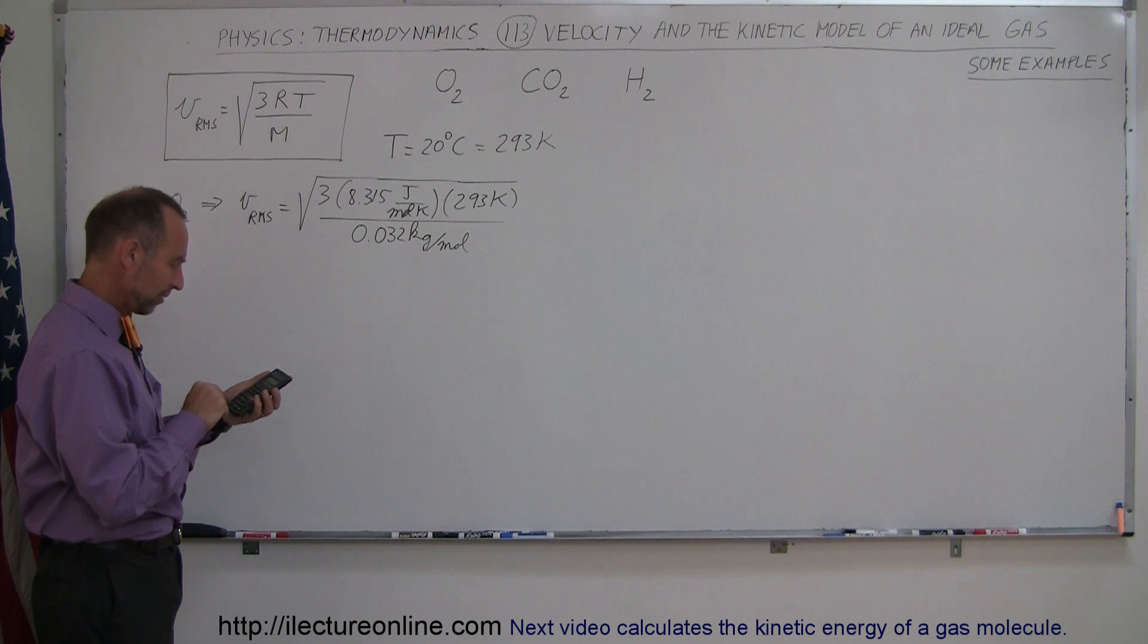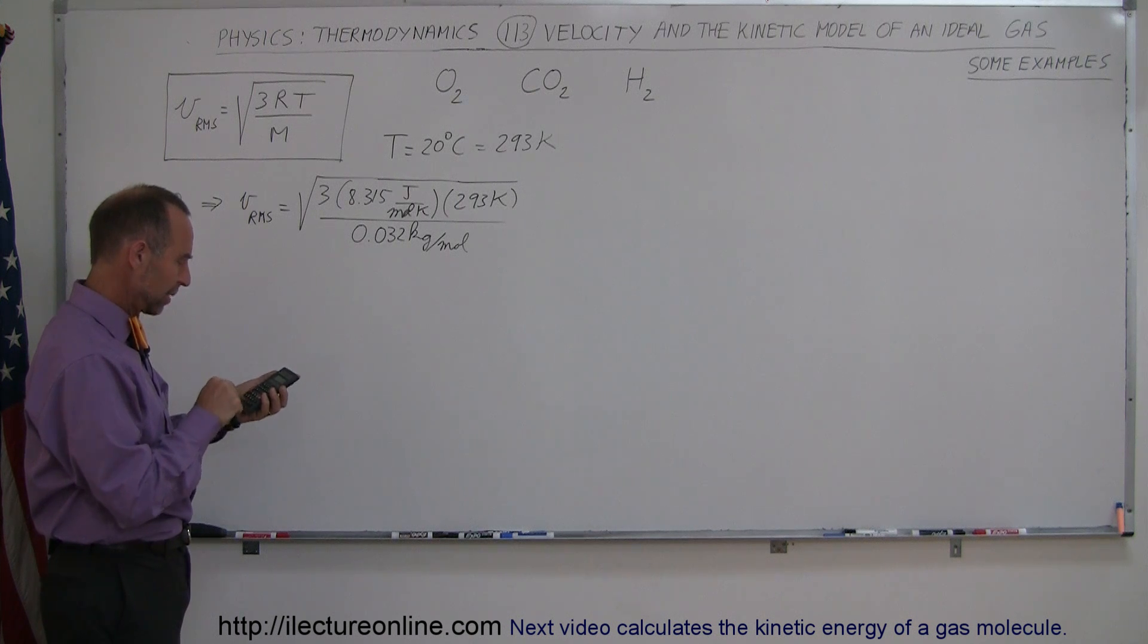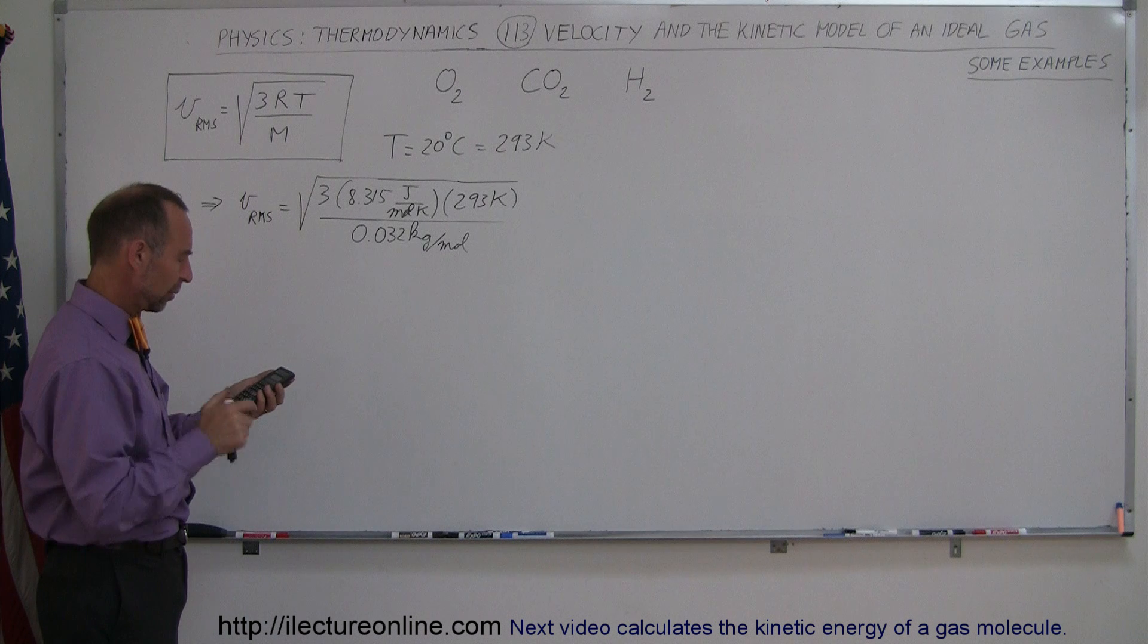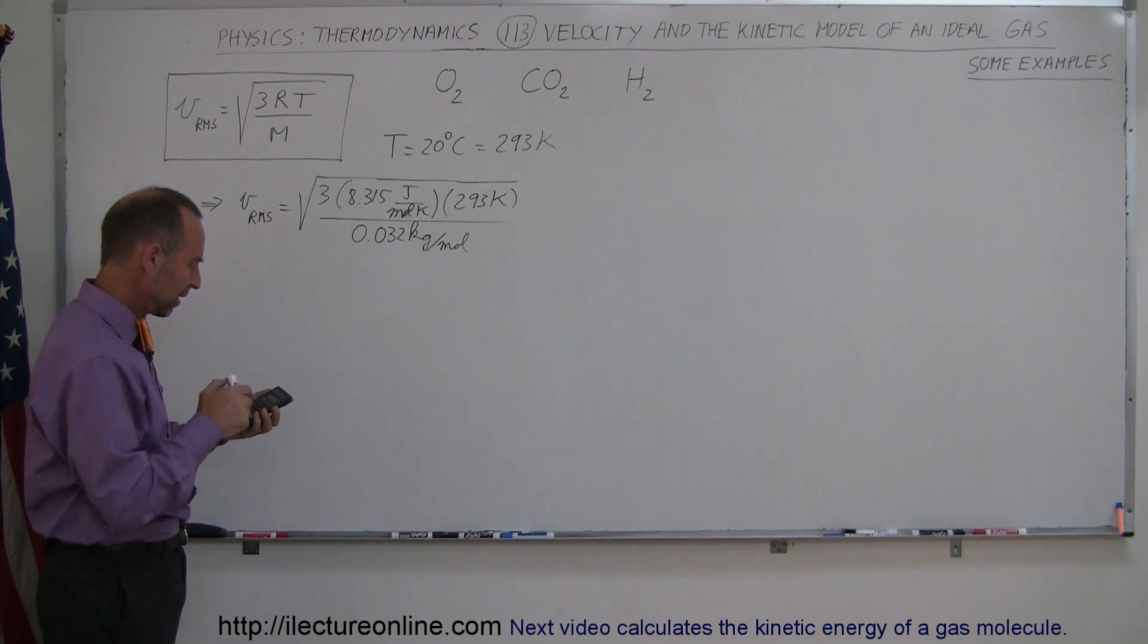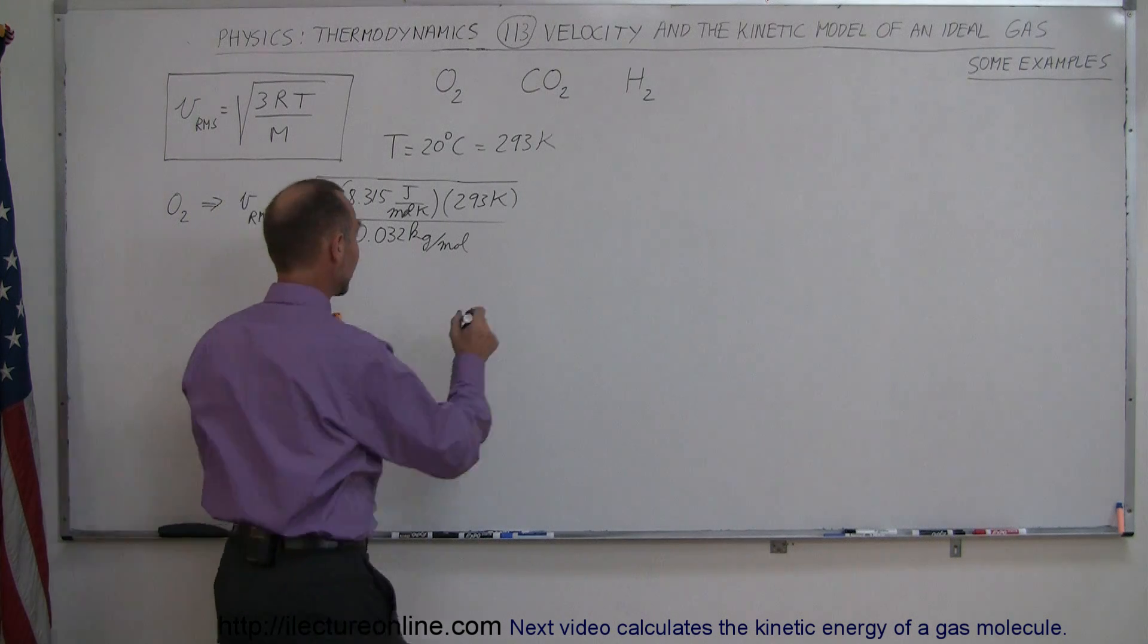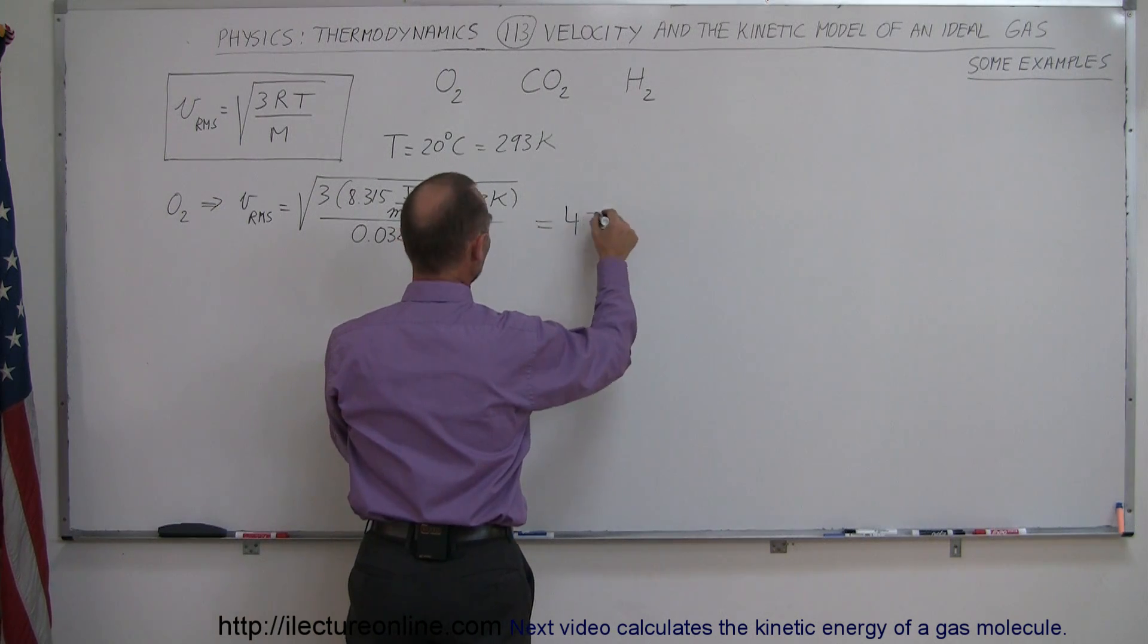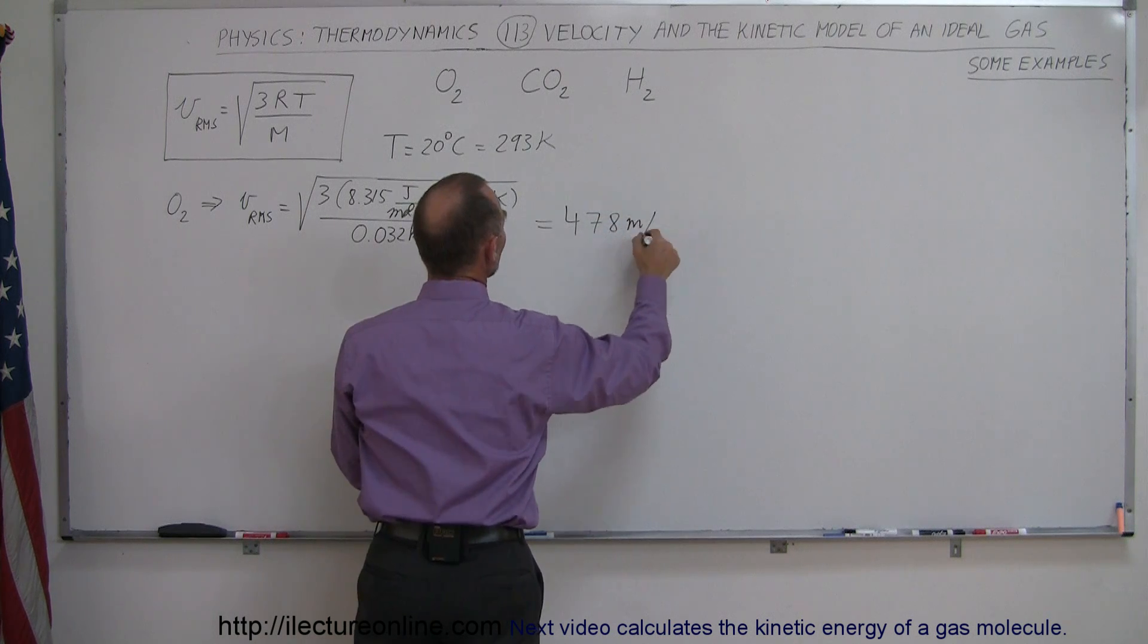You'll be surprised about the answer: 8.315 times 3 times 293, and divide by 0.032, and then take the square root of that. Believe it or not, these molecules are zipping along at a speed of 478 meters per second.